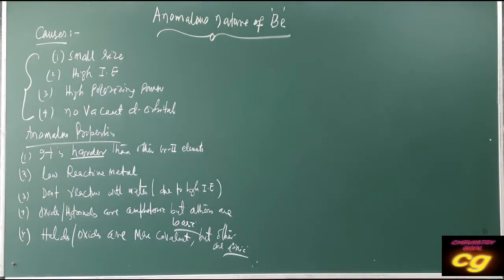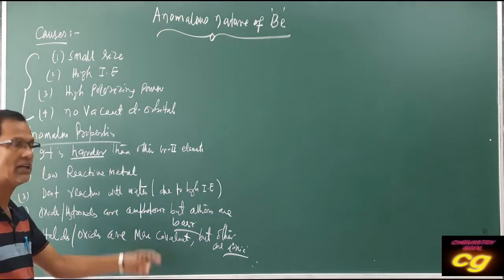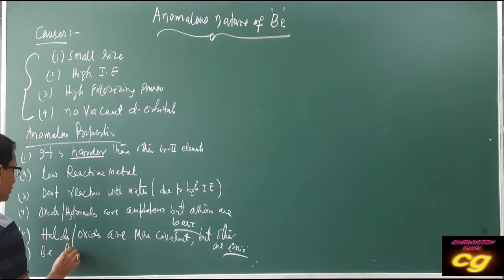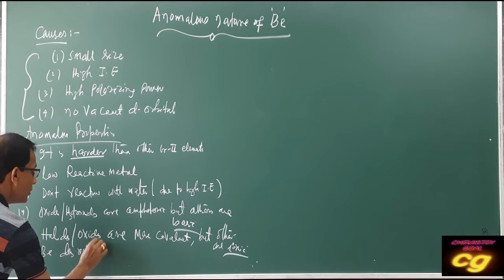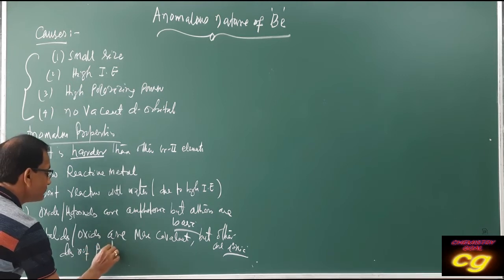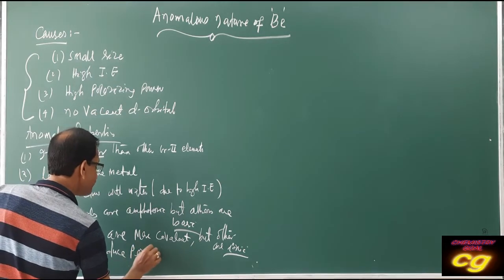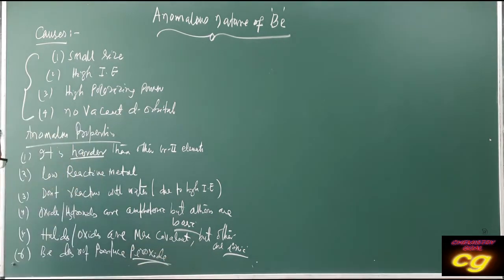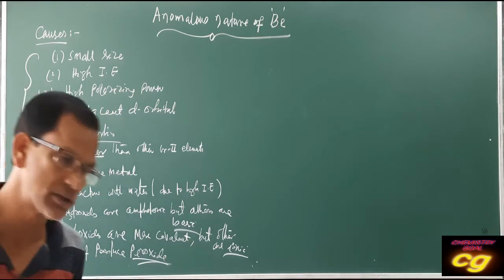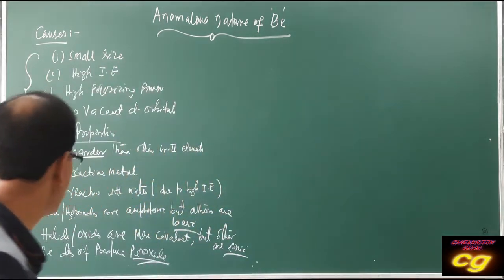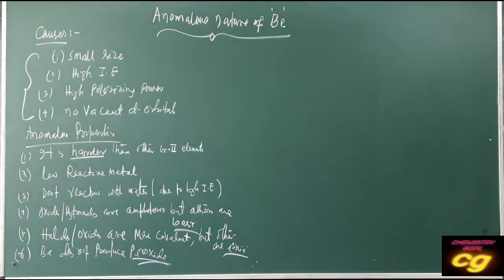Beryllium halides are covalent, but other alkaline earth metal halides are ionic. Also, beryllium does not produce peroxides, but other alkaline earth metals produce peroxides and superoxides.